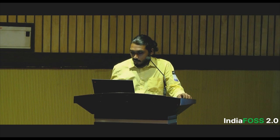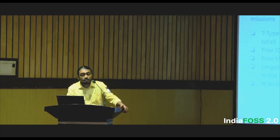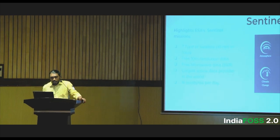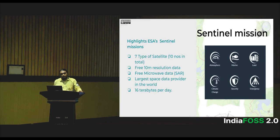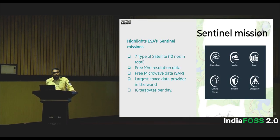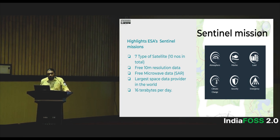Open data projects: one of the largest is the European Space Agency's Copernicus mission. They have around seven types of satellite data across ten satellites observing the entire earth in six different categories, providing 10-meter resolution data free of cost. They also have microwave data which is considered costlier. Every day, 16 terabytes of data is being generated and all of it is available free for the public and researchers to use.